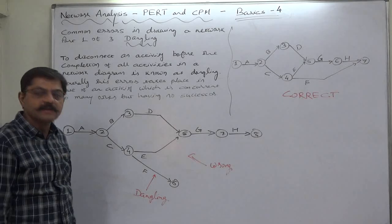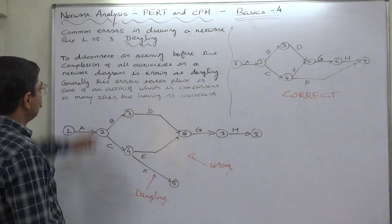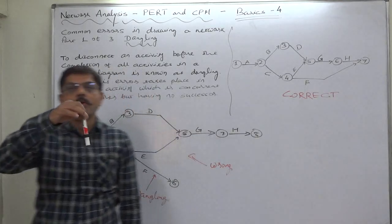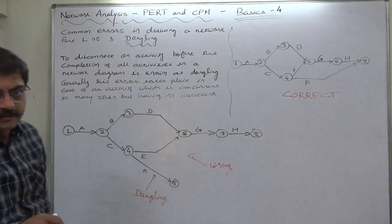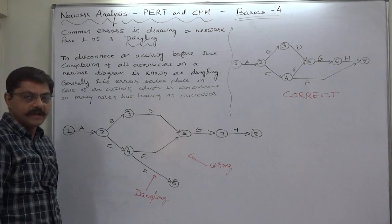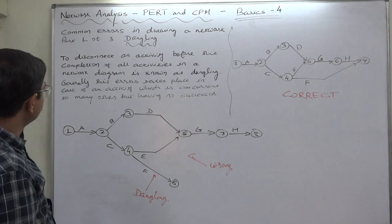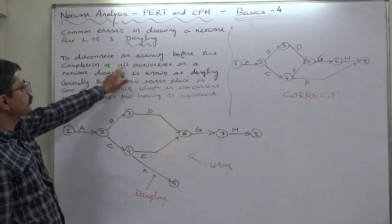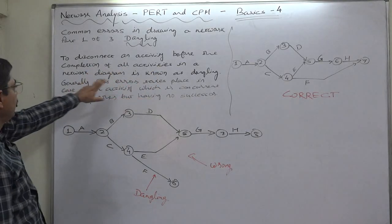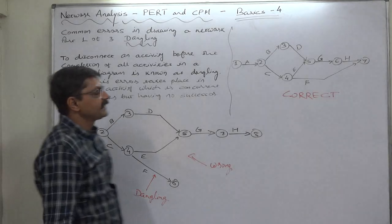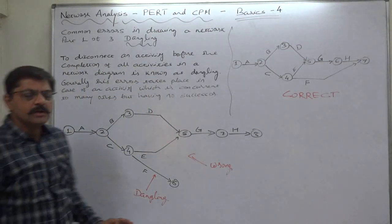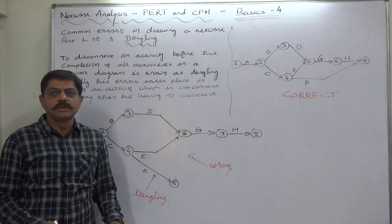...types of errors which are possible. The first is dangling. Dangling means to hold something loosely—that is the dictionary meaning. But here in network analysis, to disconnect an activity before the completion of all activities in a network diagram is known as dangling. That means it is something like leaving something incomplete.